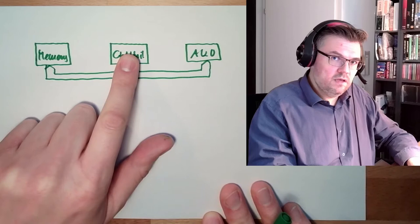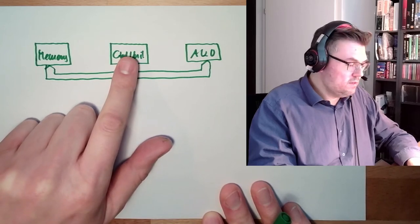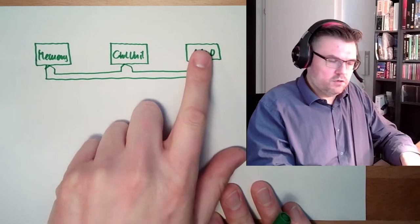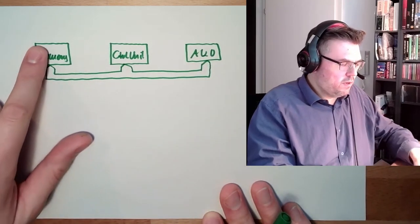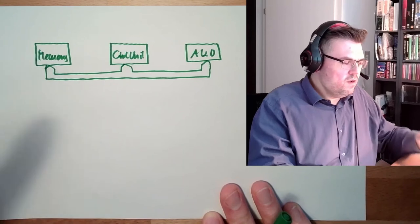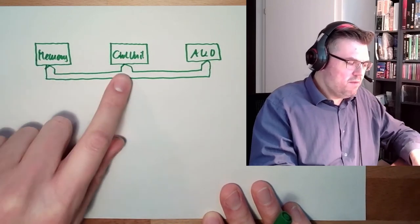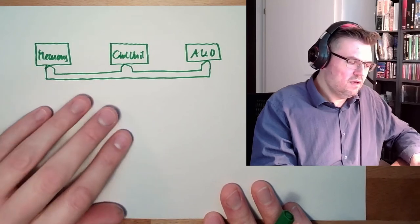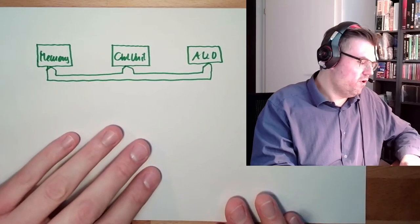The arithmetic logic unit is writing back to the memory. They all share the same data bus. This is the so-called bottleneck of the Von Neumann architecture.